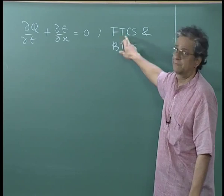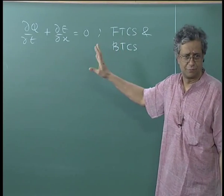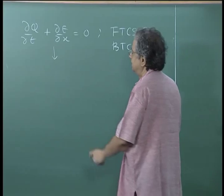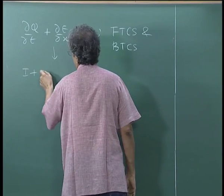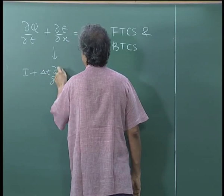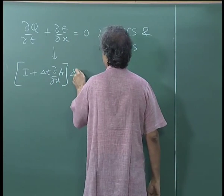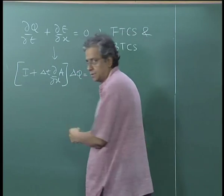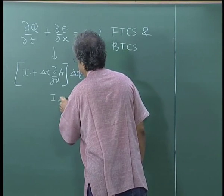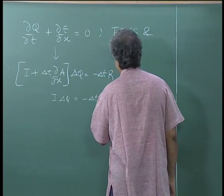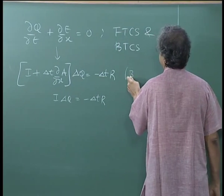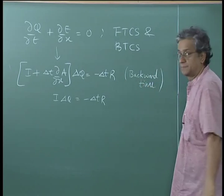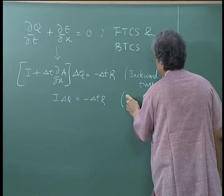FTCS can also be interpreted as being in delta form. We can write this equation as (I + Δt ∂/∂x · A) acting on Δq = −Δt · r, and I Δq = −Δt · r. So this corresponds to backward time and this is forward time.